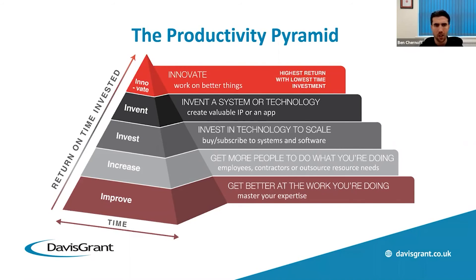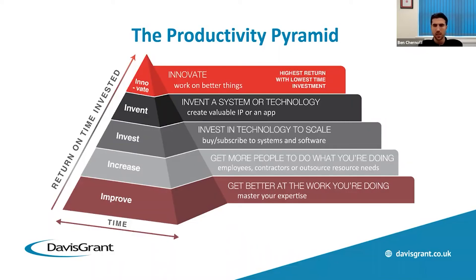Lastly, step five is about innovation — where you receive the highest possible return with the lowest possible time investment. At this stage, you might even consider throwing out a number of the systems you're currently using in favour of one that avoids the need for complex integrations. An example might be to invest in a more expensive technology solution that gives you far better information and a much better return. A number of businesses have thrown away their old cash books and are now fully digitalised on Xero.